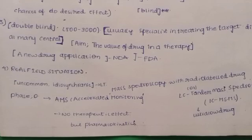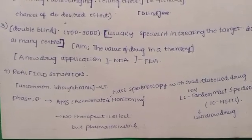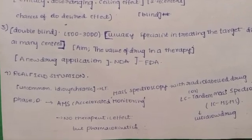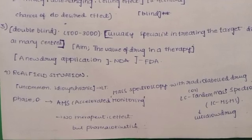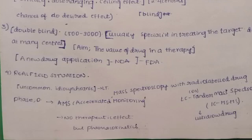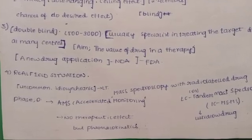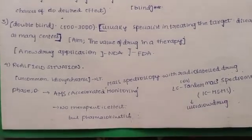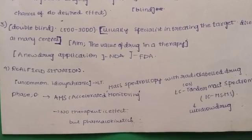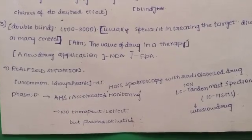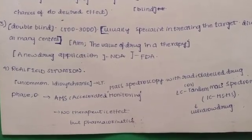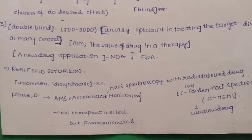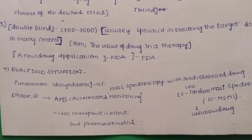Phase 4 is post-marketing surveillance — the most important real-field situation. When you look at Phase 3, you can observe only a limited number of people. In Phase 4, you can monitor conditions in a real-world setting. Uncommon and idiosyncratic adverse effects are detected here. Patients continue long-term use in the market.